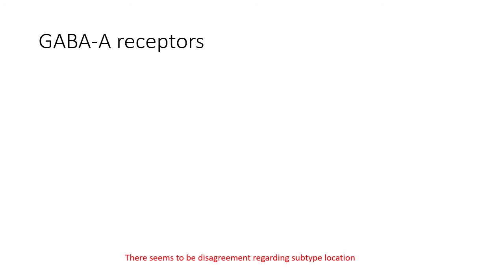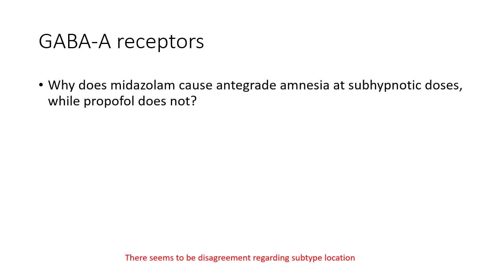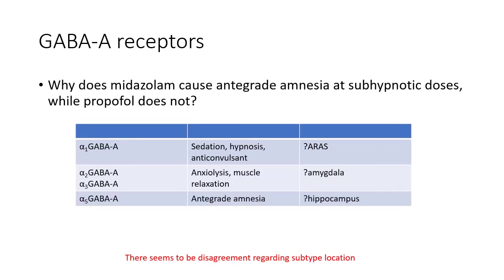The next question is this: why does midazolam cause anterograde amnesia at sub-hypnotic doses, while propofol does not? They both act at the GABA-A receptor, albeit with slightly different mechanisms. The answer is that there are several subtypes of the GABA-A receptor, and these receive differential expression across the regions of the brain. We might hypothesise that midazolam is having more of an effect at the hippocampus compared with propofol at sub-hypnotic doses.